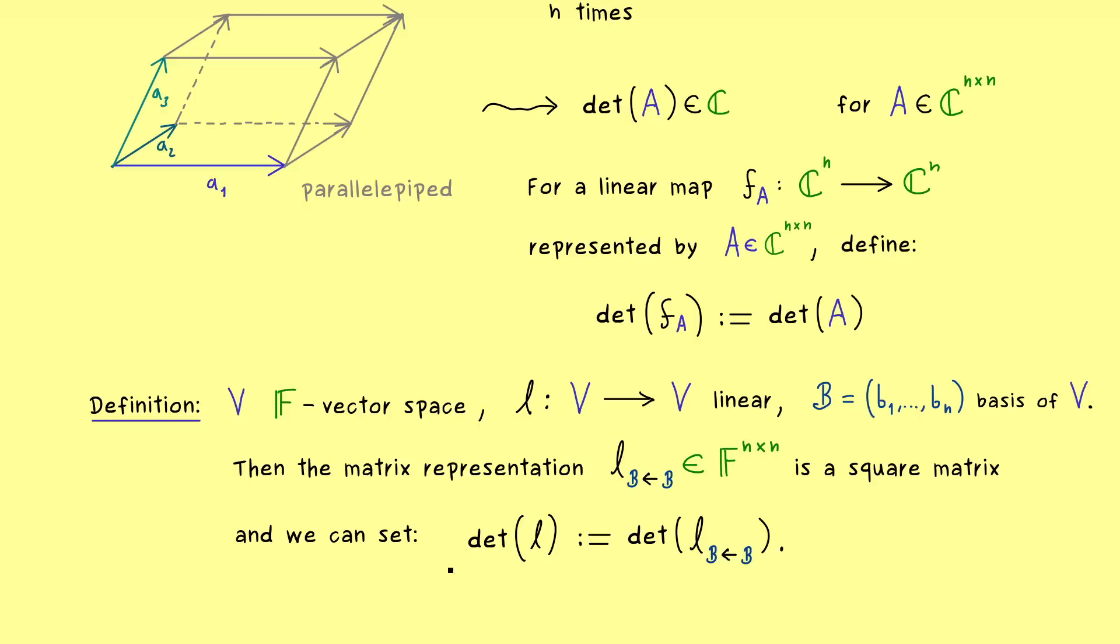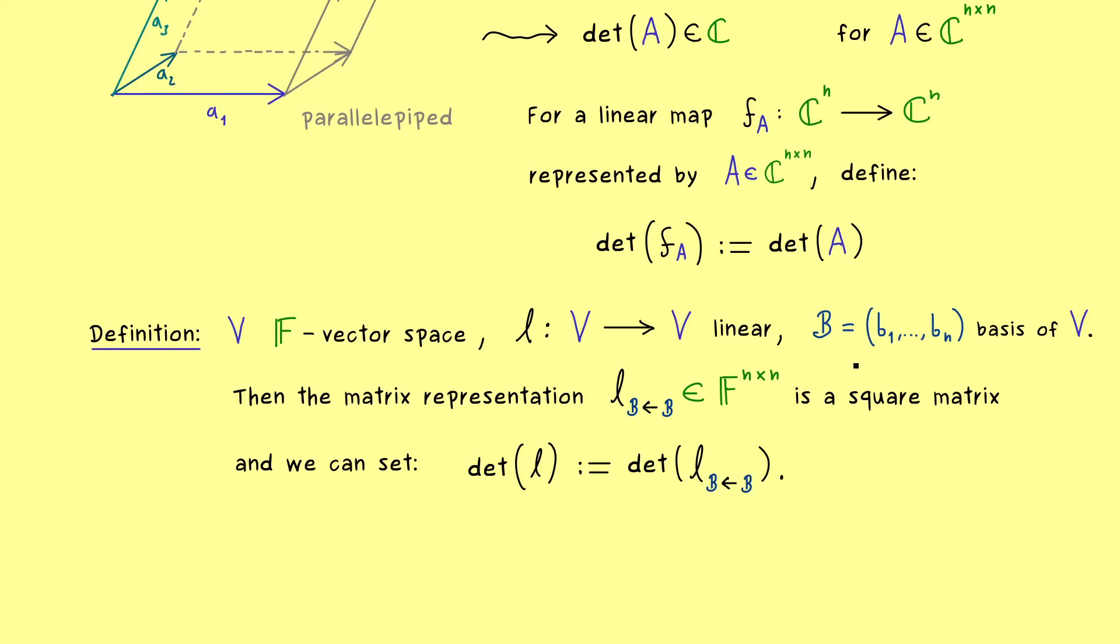However, at the moment, it's not clear that this number here is well defined. Simply because there is a choice that goes into the definition, namely the choice of the given basis. This is different to the linear map from before, because there fA was clearly defined as the linear map that sends x to Ax. Hence there was no choice for the matrix A,